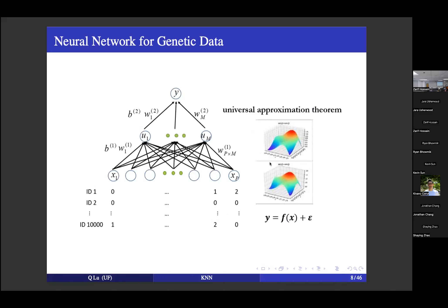Deep learning can be used for many data types, such as genetic data. SNP data can be viewed as an ordinary variable with three values — 0, 1, 2 — coding for the number of minor alleles. SNP data is high-dimensional; P could be one million for GWAS data, or multi-million for sequencing data. If we denote the SNP as X and the phenotype, such as BMI, as Y, and use F to describe their relationship, based on the central dogma, this relationship is very complicated and no one knows what this F function is.